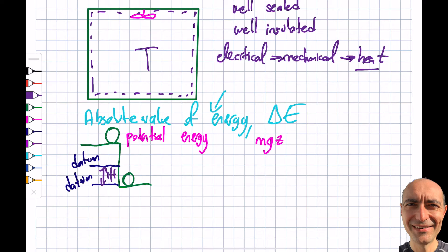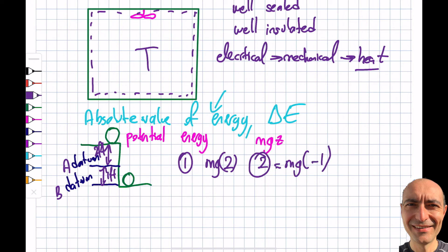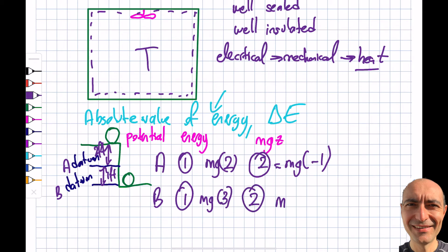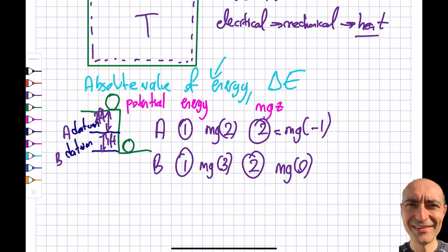Let me show this numerically. Say position 1 is at 2 ft and position 2 is at 1 ft. Student A's datum is at the bottom: E₁ = mg(2), E₂ = mg(1). Student B's datum is at the top: E₁ = mg(3), E₂ = mg(0). When you compute ΔE = E₁ − E₂, Student A gets mg(2−1) = mg(1) and Student B gets mg(3−0) = mg(3)... but with consistent reference, the difference mg times the height change is the same. The delta is identical.